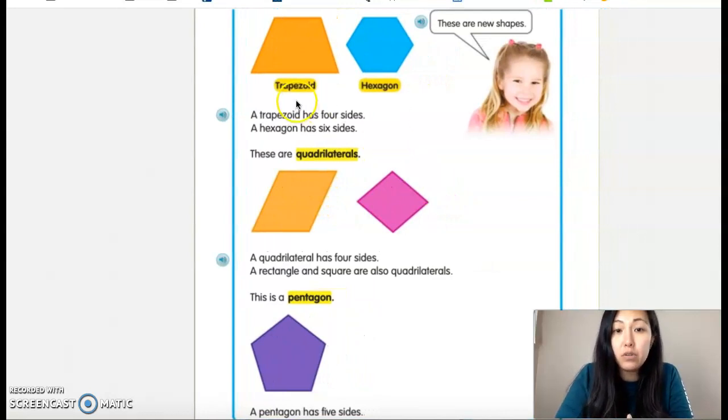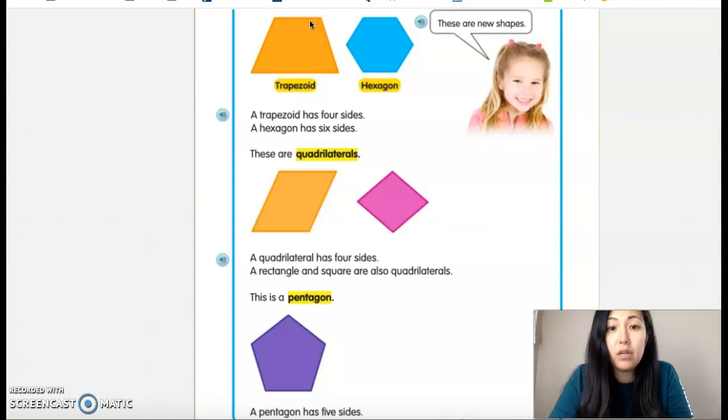We have the trapezoid. If you notice there is one, two, three, four sides to a trapezoid. We have a hexagon which has six sides. And if I were to cut this hexagon in half, it could be a, somebody said a trapezoid, boys and girls.